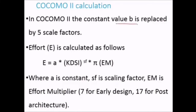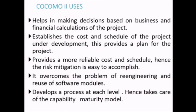In COCOMO 2, the constant B is replaced by five scale factors. Effort E = A × KDSI^SF × Em, where SF is the scaling factor and Em is the effort multiplier — 7 for early design and 17 for post architecture. COCOMO 2 supports business and financial decision-making, establishes project cost and schedule, enables easier risk mitigation, overcomes re-engineering and reuse problems, and addresses the Capability Maturity Model at each process level.